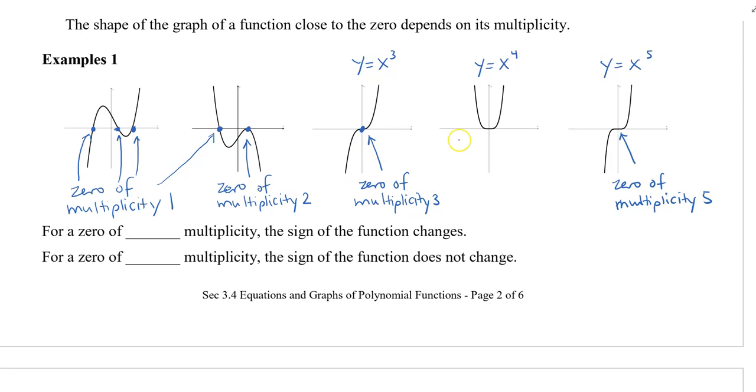What's common about these two is that you can see it hits the x-axis, flattens out, and then keeps going up. Same with this one. So it goes in one direction, it flattens out, and then it keeps on going in the same direction it was going before.